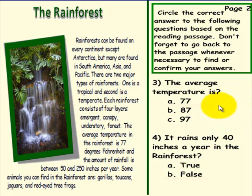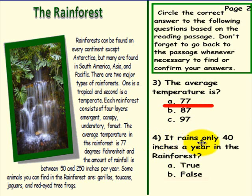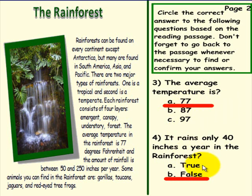Here are the answers. Number 3: The average temperature is 77 degrees Fahrenheit. Question 4: It rains only 40 inches a year in the rainforest — that is false. It is incredible — it rains between 50 and 250 inches per year! If your answers match, that is truly amazing, way to go! Please pick up an eraser and erase your answers. We would like to thank you for working with us today on reading and comprehension.